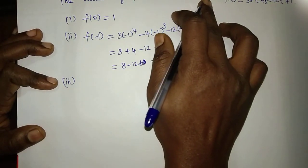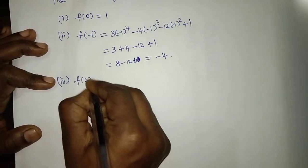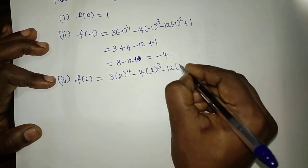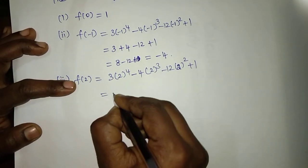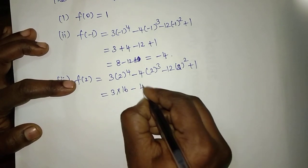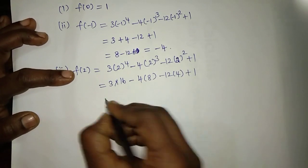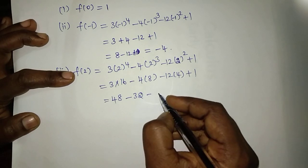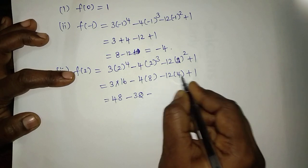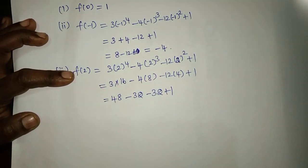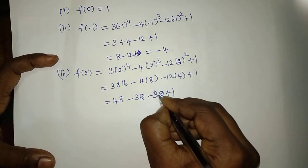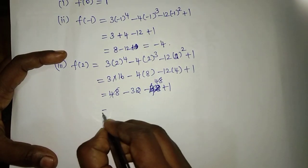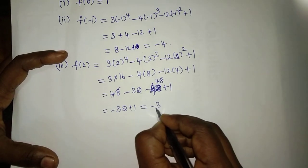The third value: F of 2 equals 3 times 2 to the power 4, minus 4 times 2 cubed, minus 12 times 2 squared, plus 1. Simplifying: 3 times 16 equals 48, minus 4 times 8 equals minus 32, minus 12 times 4 equals minus 48, plus 1. So 48 minus 32 minus 48 plus 1: 48 minus 48 cancels, leaving minus 32 plus 1, which equals minus 31.